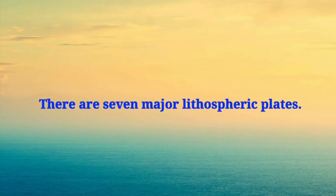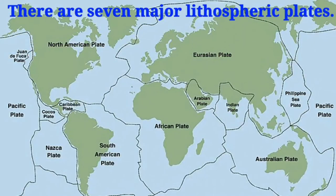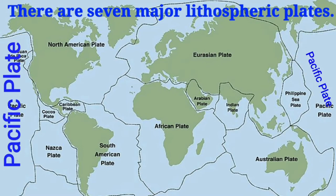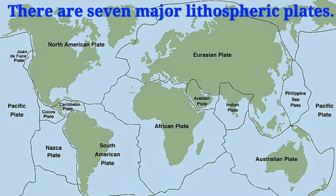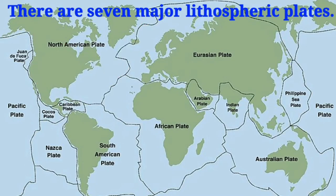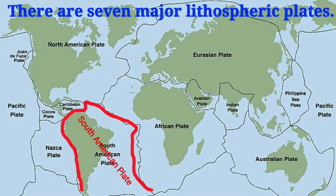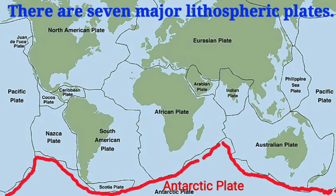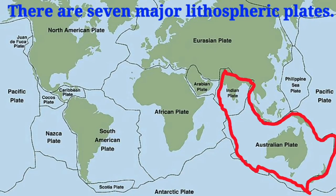There are seven major lithospheric plates: the African plate, the Eurasian plate, the Pacific plate, the North American plate, the South American plate, the Antarctic plate, and the Indo-Australian plate.